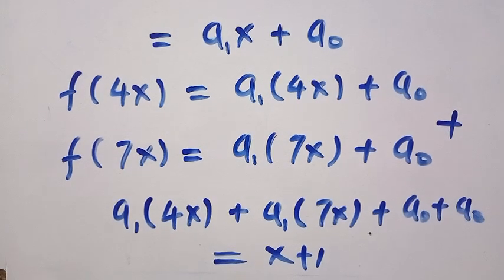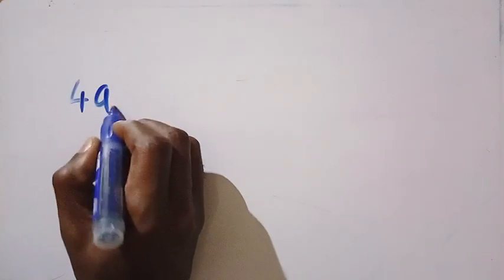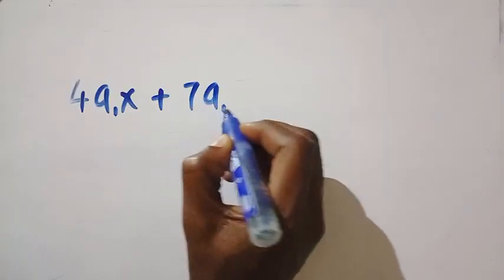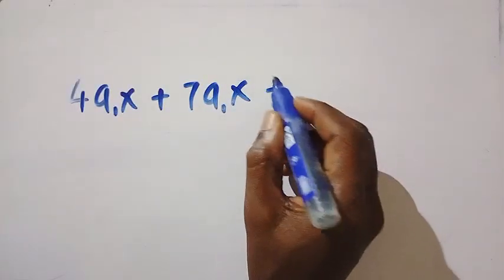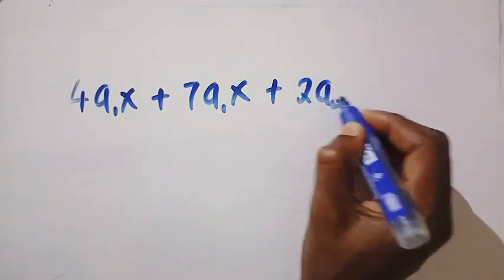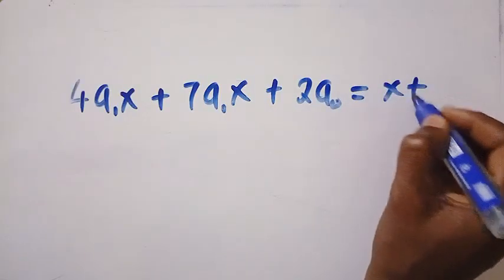Then we have, next, we have 4a_1 multiplied by x plus 7a_1 multiplied by x plus a_0 plus a_0, that gives us 2a_0 equals x plus 1.